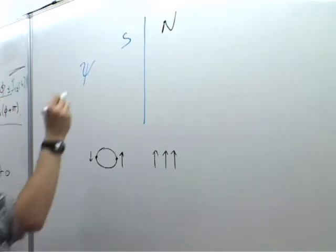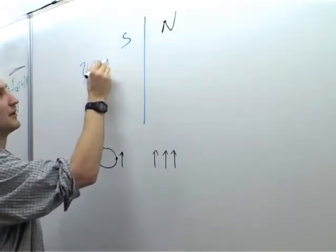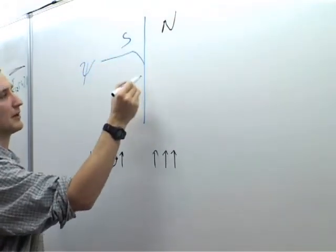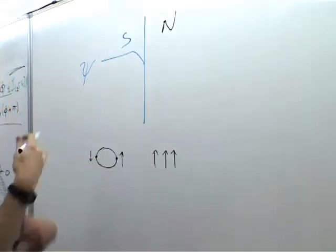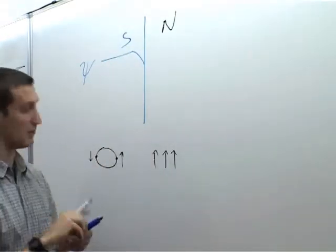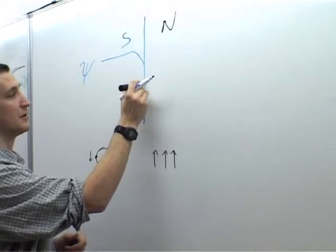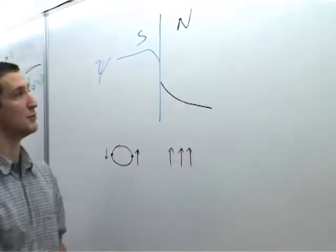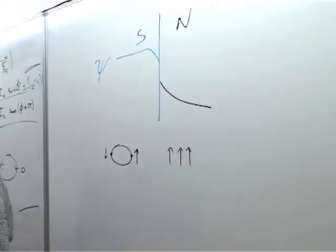The function psi is happy in the superconductor, and it comes along, goes down, and then into the normal metal. You can get this proximity effect, so in the normal metal you can see some superconductivity penetrates into the normal metal.